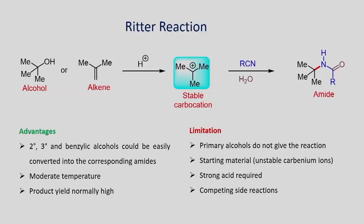The Ritter reaction is shown. If you have a tertiary alcohol or substituted alkene, when you react with acid you form a carbocation. Once you form the carbocation, if you add a nitrile which undergoes addition reaction, you form an iminium ion, which when you do workup with water is converted into an amide.